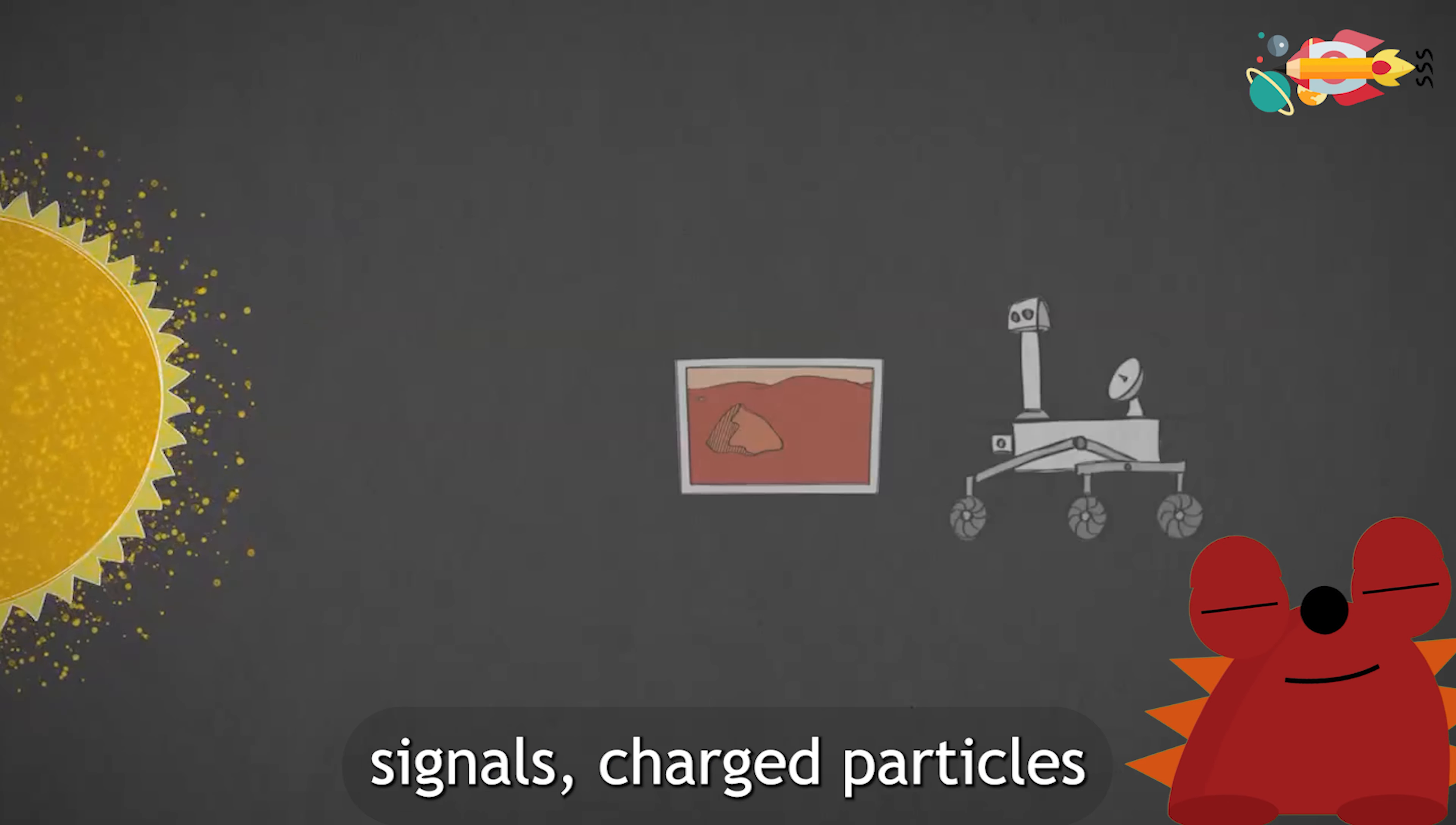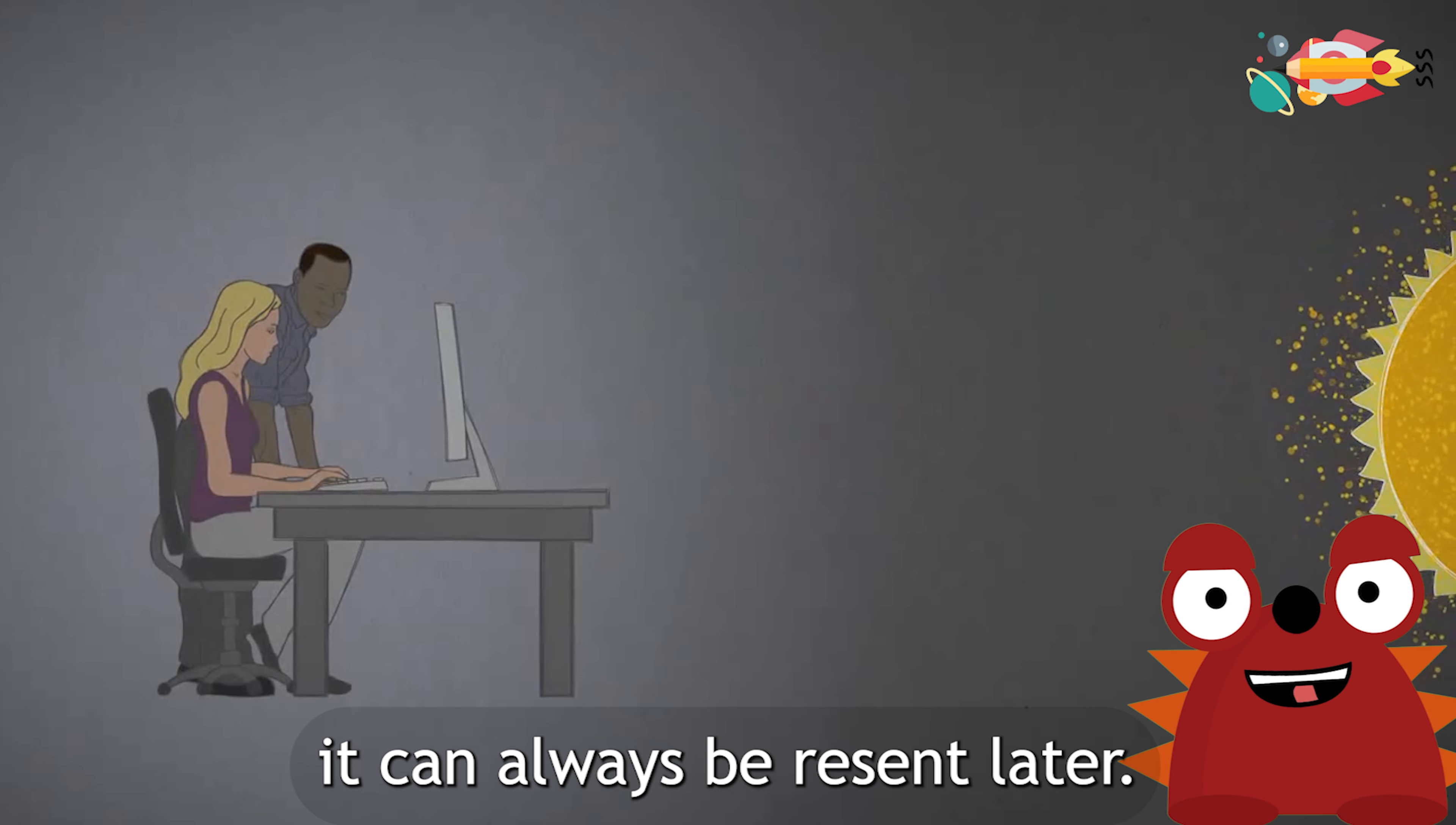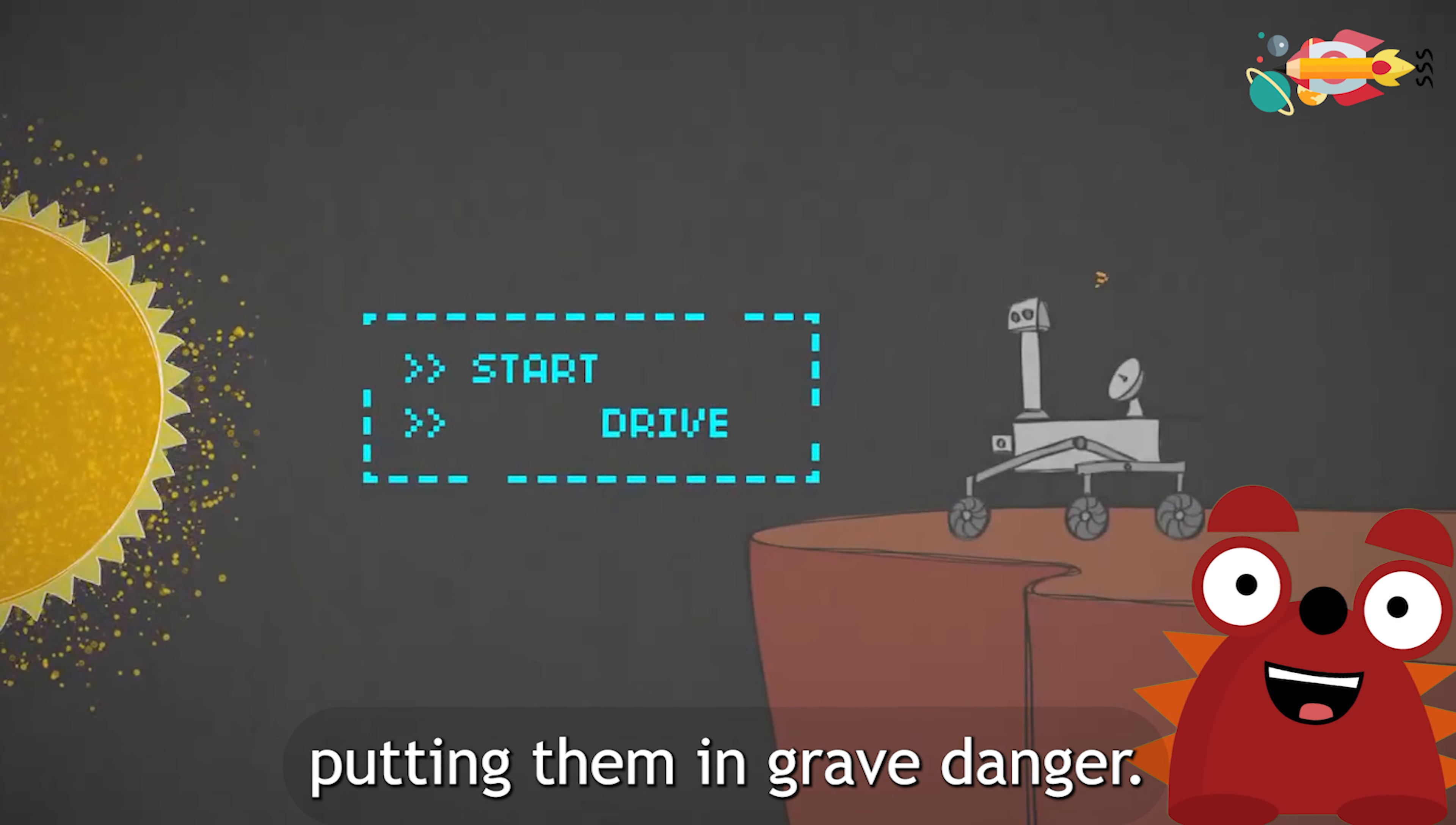If our spacecraft send back signals, charged particles from the Sun could interfere, causing gaps in the data that reach us. That's not a big deal. If something's missing, it can always be resent later. But no way do we want to lose data when we send up commands. Receiving a partial command could confuse the spacecraft, putting them in grave danger.